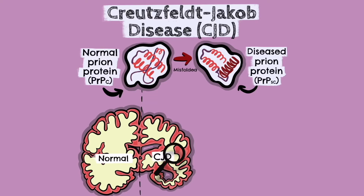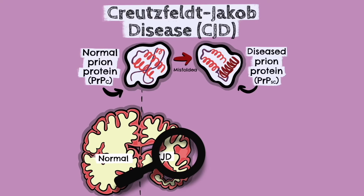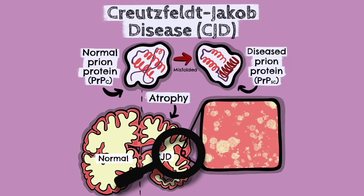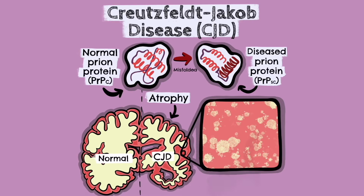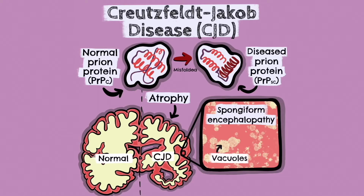Macroscopically, the damage results in brain atrophy or wasting. Microscopically, the accumulation of abnormal prion proteins in the brain causes vacuolation in the grey matter. These holes that form give the brain a spongy appearance histologically, and this is why it is known as spongiform encephalopathy.